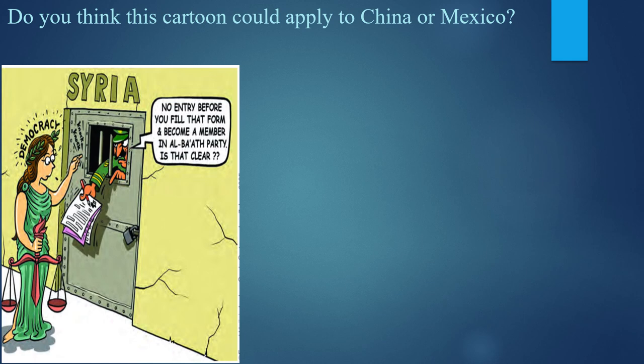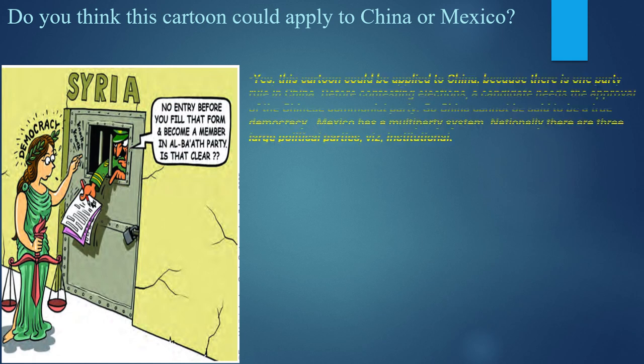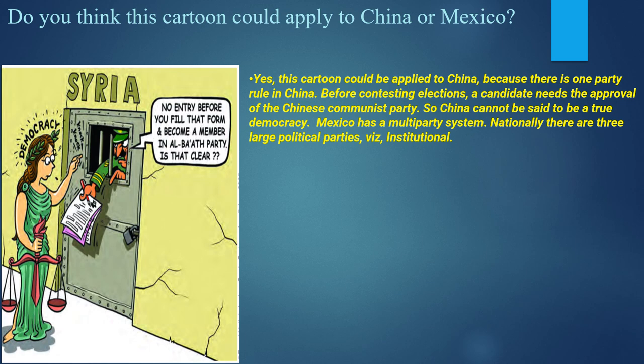China cannot be said to be a true democracy — only one party, the Communist Party of China, rules there, and candidates are not free to contest elections. In Mexico, elections are held regularly in a multi-party system, yet there is one dominant party: the PRI. Until 2000, every election was won by PRI, which was known to use many dirty tricks to win elections.